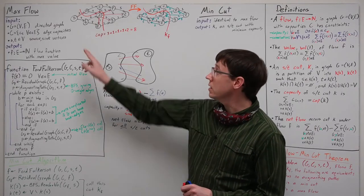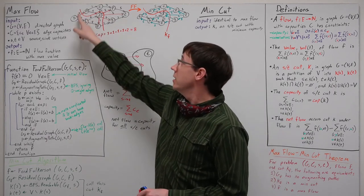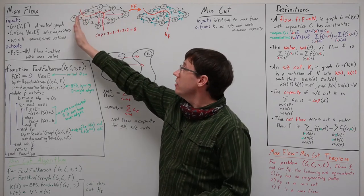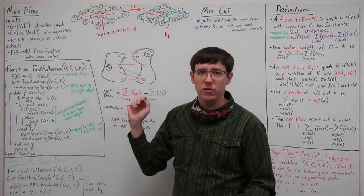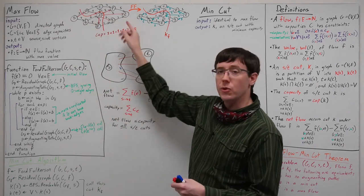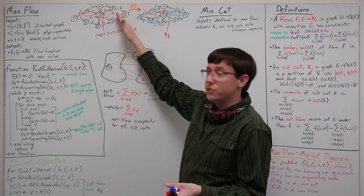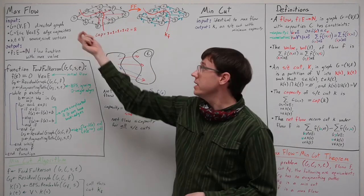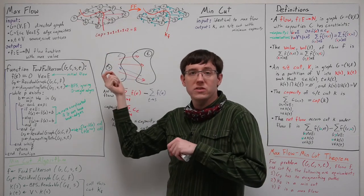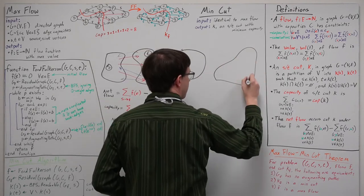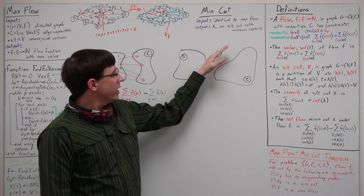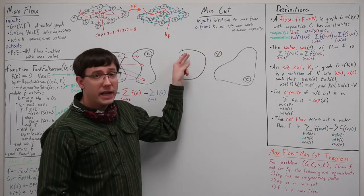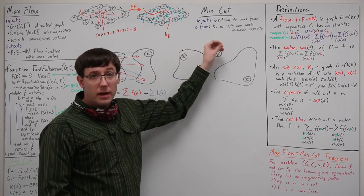This immediately tells us that the flow is upper bounded by the capacity of any cut, because the value of the flow equals the outflow from s, and the net flow across any cut that separates s from t must equal the outflow from s. Likewise, the value of the flow equals the inflow to t, and the inflow to t equals the net flow across any such cut. But what about other cuts in the graph? Let's think about how the net flow changes if we move a vertex from one side of a cut to the other.